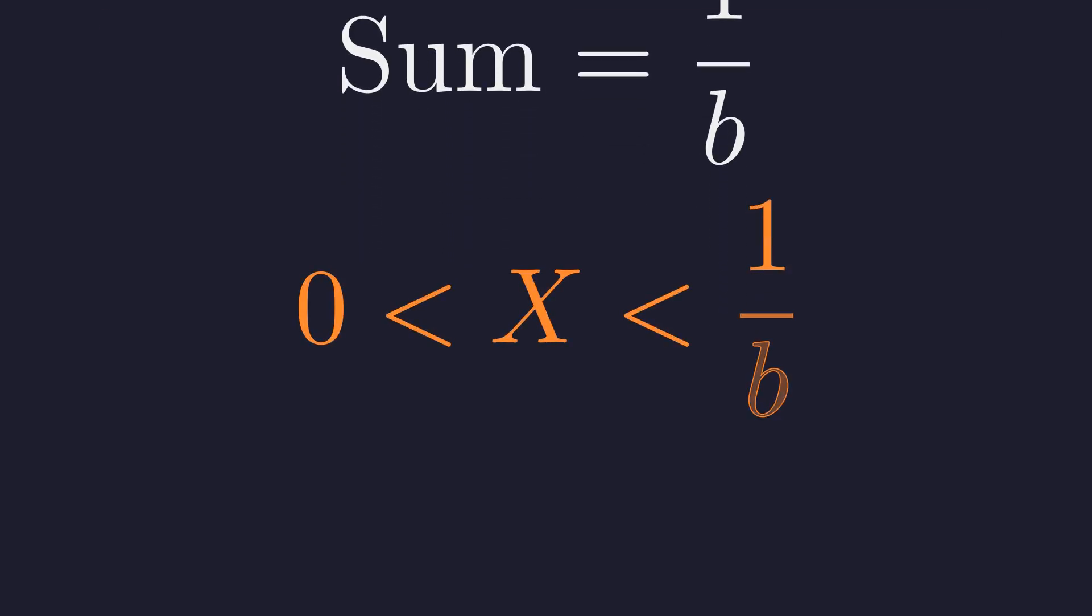So, we've shown that our tail X is strictly greater than 0 and strictly less than 1 over B. Since B is a positive integer, it must be at least 1. This implies that 1 over B is at most 1. Therefore, X is a value strictly between 0 and 1. This is the critical result. X cannot be an integer.